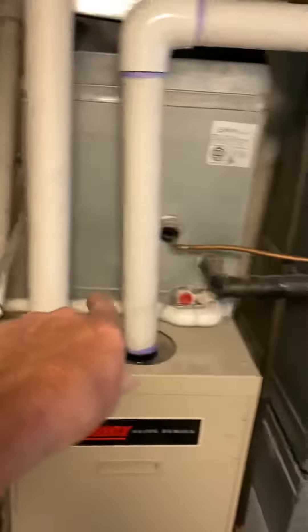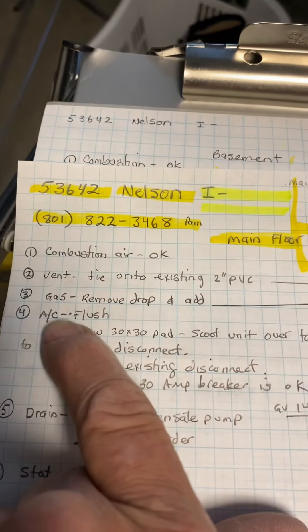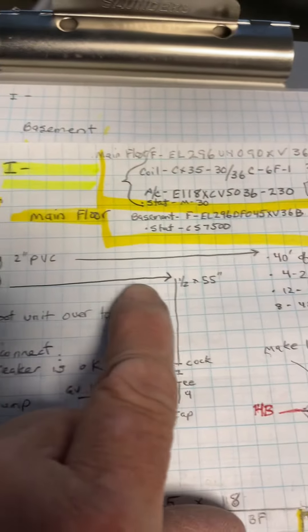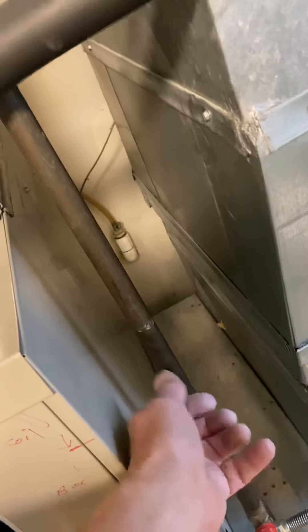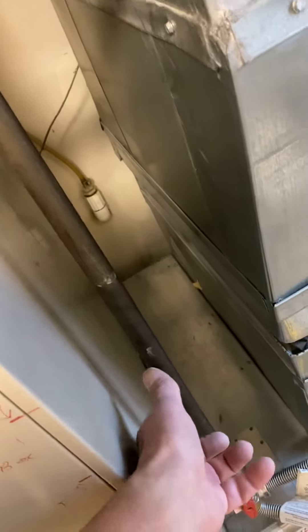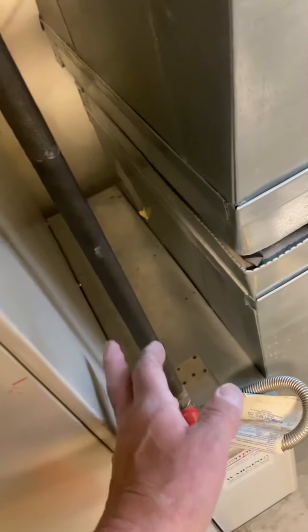The vent you're going to tie into the existing three inch PVC. Sorry, existing two inch PVC. The gas, on this one you're going to remove the drop and add a shorter drop, 55 inch drop with a gas caulk and a drip leg.